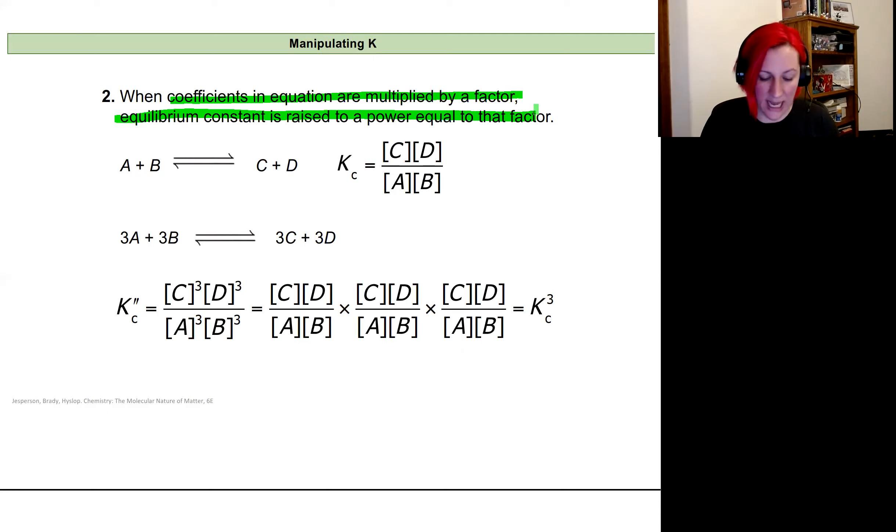That would essentially add these coefficients into our equilibrium expression - that's the only difference, we're changing the exponent. So if I'm raising everything to the third power, I can instead take the K expression from the original without the exponents of 3 and raise that to the third power.